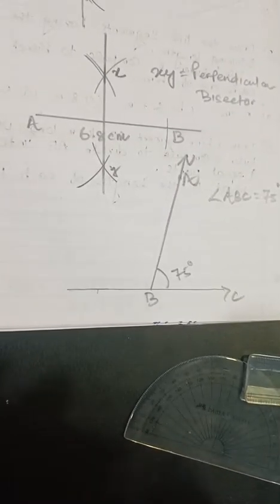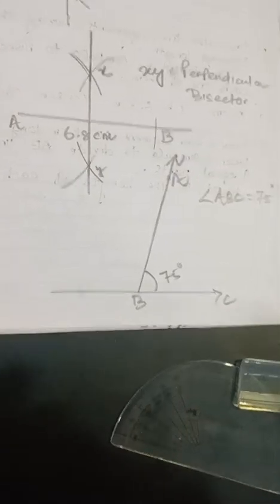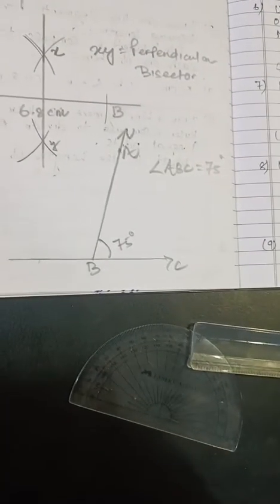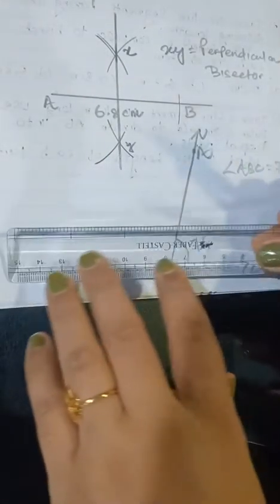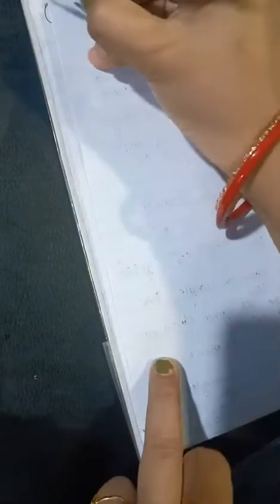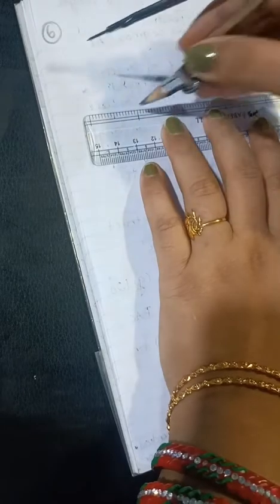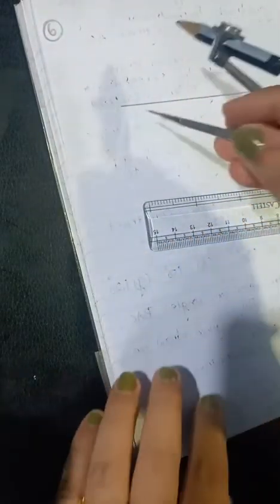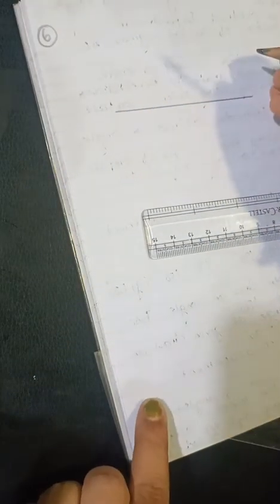Now with the pair of compass, draw the angle 75 degrees. Using the ruler, draw the line. 75 degrees is 60 degrees plus 15 degrees. From point O, we have to draw this construction.